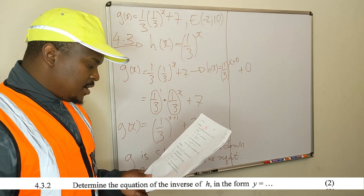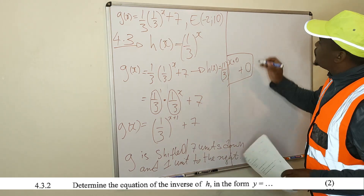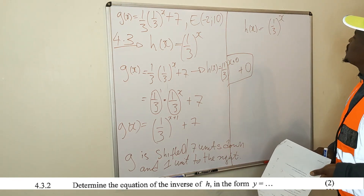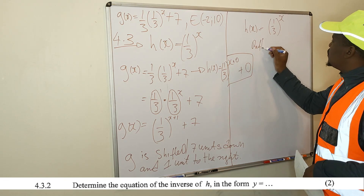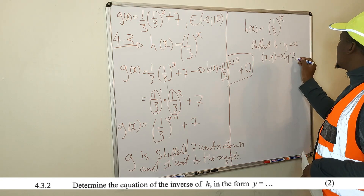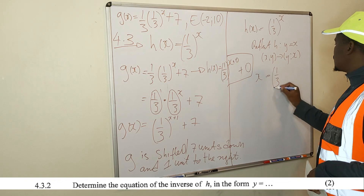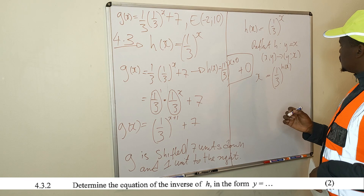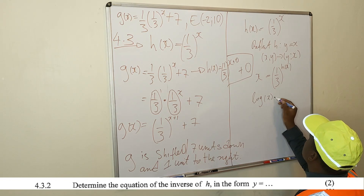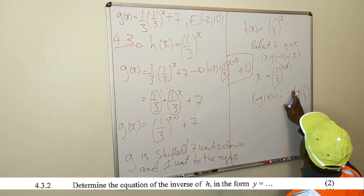So 4.3.2: determine the equation of the inverse of h in the form y equals... They want the inverse of h of x, where h of x equals (1/3) raised to x. To find the inverse, you reflect h about y equals x, so x and y swap around. Now you have x equals (1/3) raised to y. Put log on both sides.